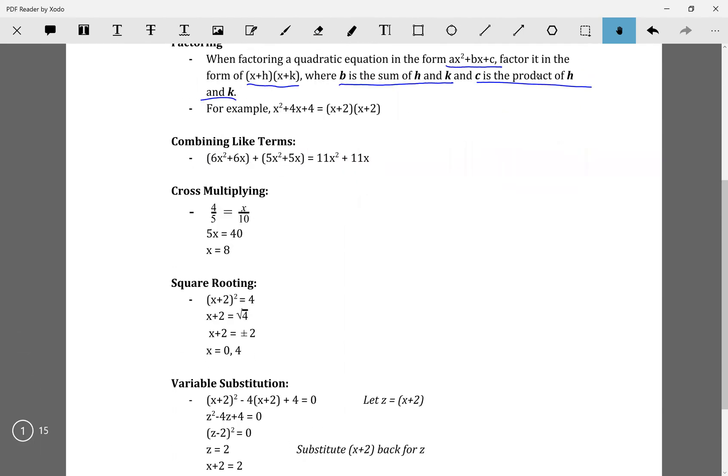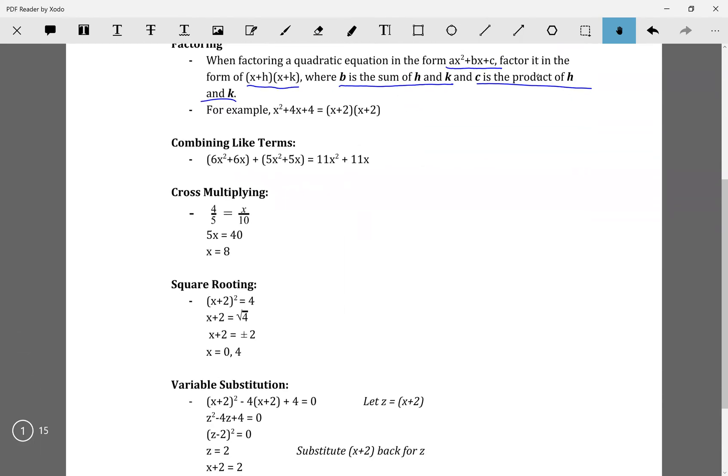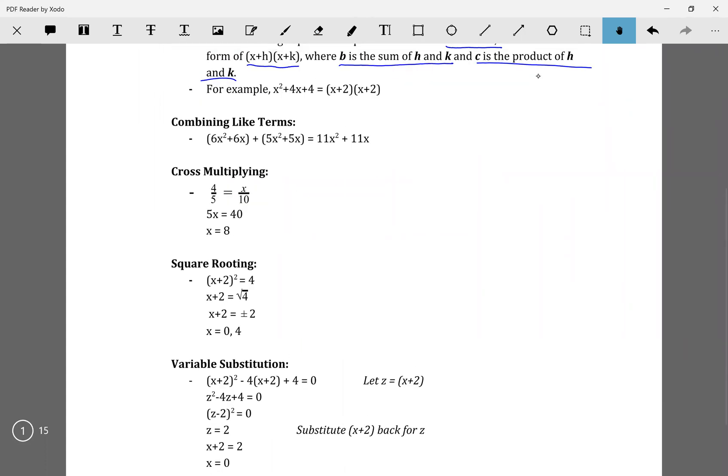Next, we have combining like terms. Factoring and combining like terms are two things we also went over in the last video. Combining like terms is very simple. You have two expressions that you're adding or subtracting, and you combine them. So I'm combining 6x squared and 5x squared first because they have the same variable and exponent. So 6 plus 5 is 11, that's 11x squared. Now 5x and 6x for the same reasons gives us 11x, so this is the resulting expression.